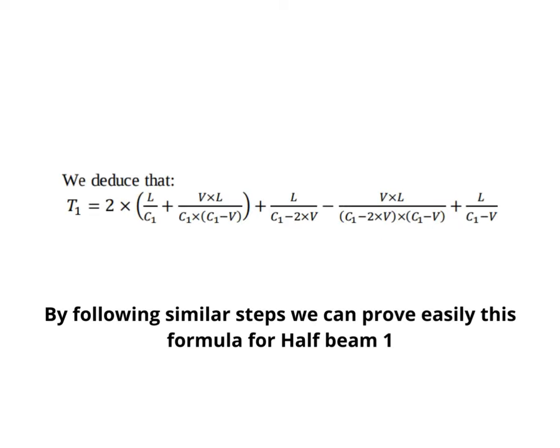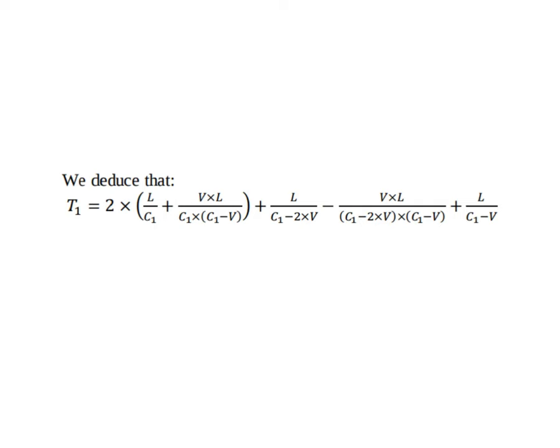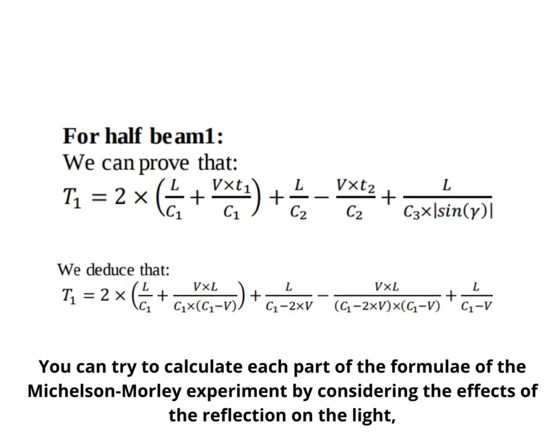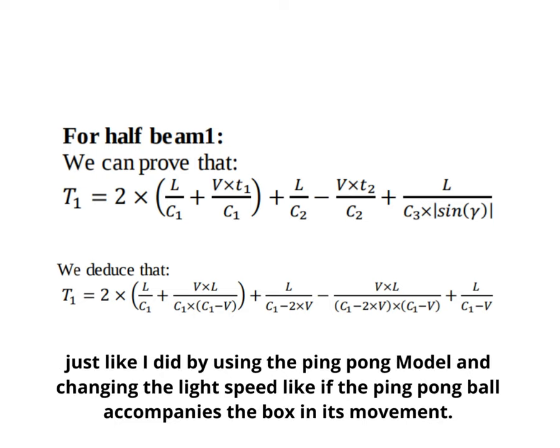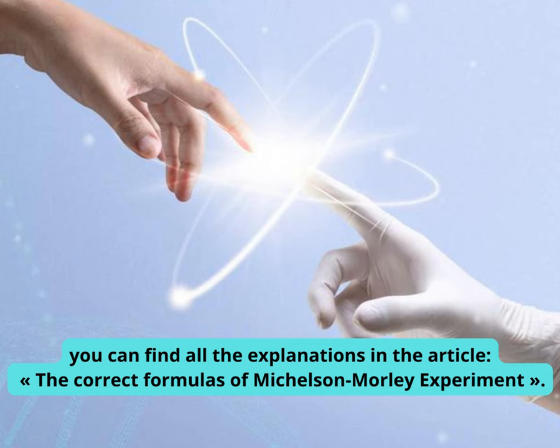By following similar steps we can prove easily this formula for half beam 1. You can try to calculate each part of the formulas of the Michelson-Morley experiment by considering the effects of the reflection on the light, just like I did by using the ping pong model and changing the light speed like if the ping pong ball accompanies the box in its movement. You can find all the explanations in the article the correct formulas of Michelson-Morley experiment.